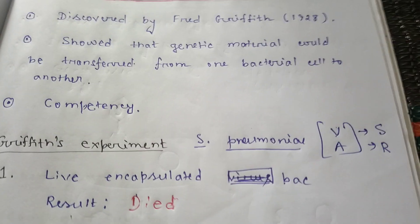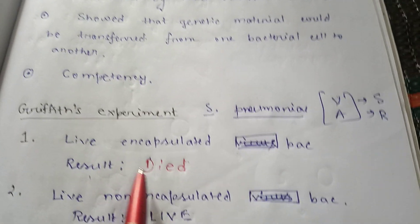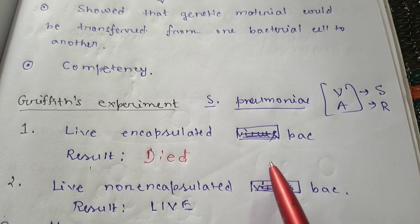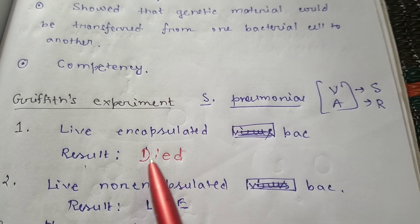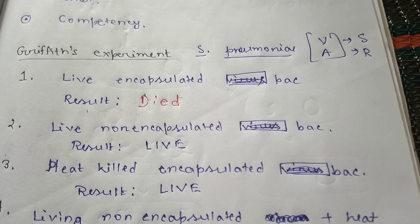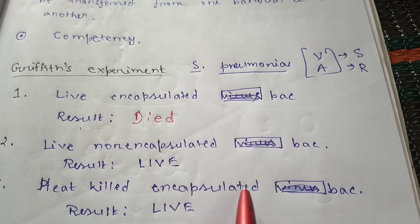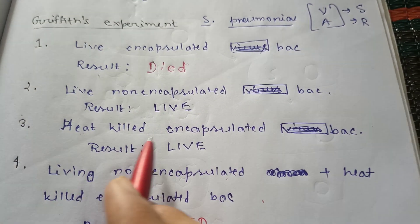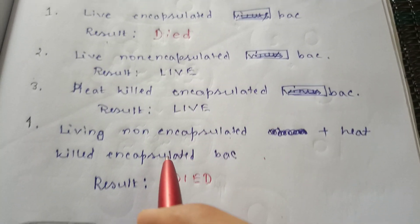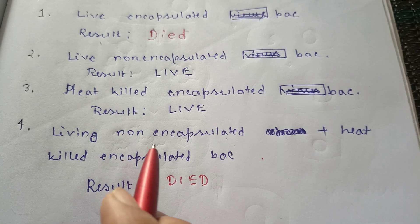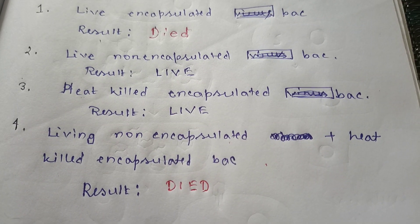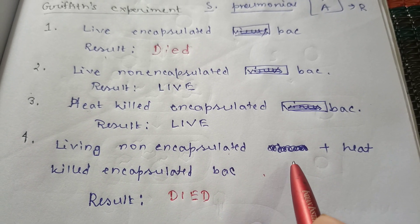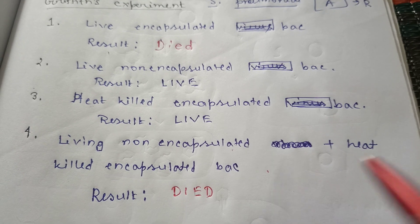Further examination confirmed these results. From the first scenario, colonies of encapsulated bacteria were isolated from the dead mouse. From the second, non-encapsulated bacteria were isolated. From the third, with heat-killed bacteria, no colonies were found. From the fourth, encapsulated bacterial colonies were found, confirming that the non-encapsulated bacteria had been transformed into encapsulated bacteria, subsequently causing the disease.